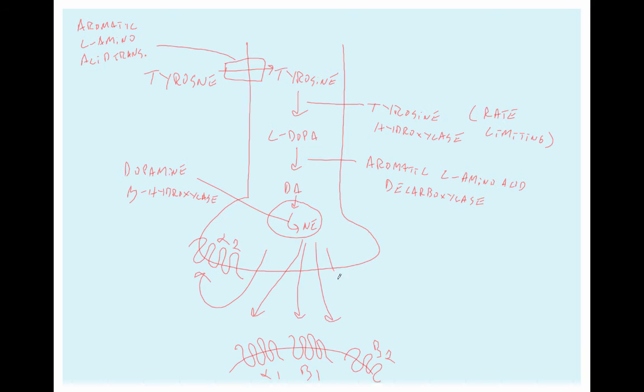And finally, the norepinephrine that's released can be reuptaken or re-internalized through the norepinephrine transporter, also known as NET. And this is the principal way that norepinephrine is recycled for future use. And this would include norepinephrine that's not used, that doesn't bind to a receptor, and also norepinephrine that binds to a receptor but then falls off, and then it can be recaptured by the presynaptic neuron.